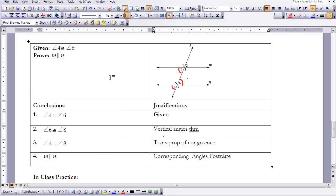So this proof here proves that when the alternate interior angles are congruent, the lines are parallel.